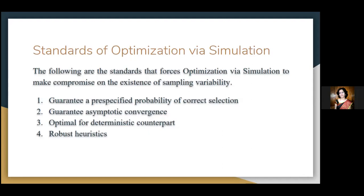The third standard: optimal for deterministic counterparts. The idea is to use an algorithm that would find the optimal solution if the performance of each design could be evaluated with certainty. An example is applying the standard non-linear programming algorithm to the simulation optimization problem. The fourth standard: robust heuristics. Many heuristics have been developed for deterministic optimization problems that do not guarantee finding the optimal solution but have been shown to be very effective on difficult practical problems. Some of these heuristics incorporate randomness as part of their search strategy.